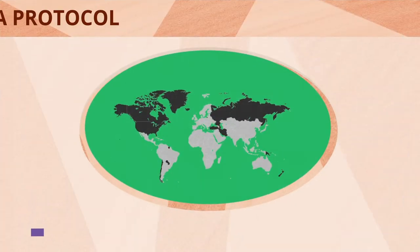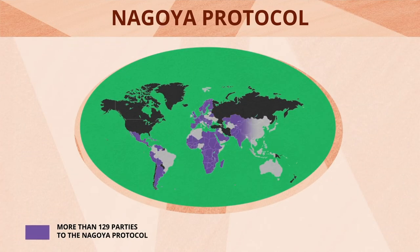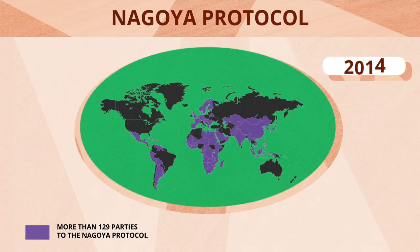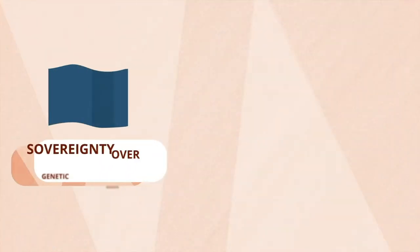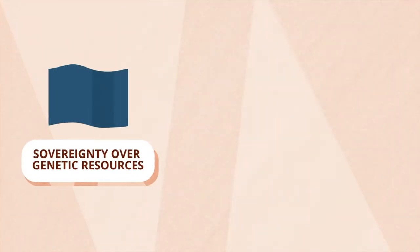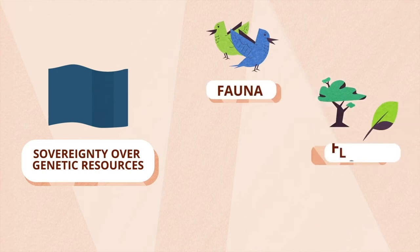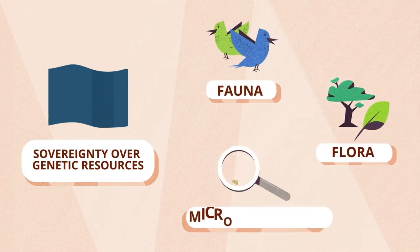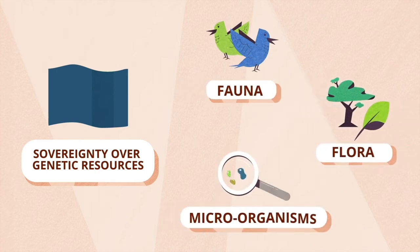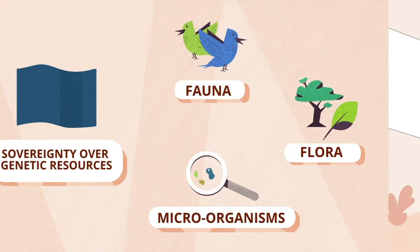The Nagoya Protocol, adopted in 2010 and entering into force in October 2014, specifies the implementation of ABS by states. Each state has sovereign rights over its genetic resources, whether from its fauna, flora, or microorganisms.